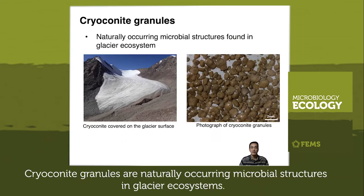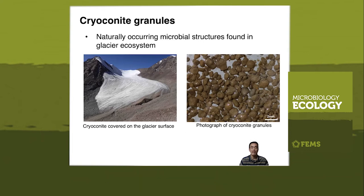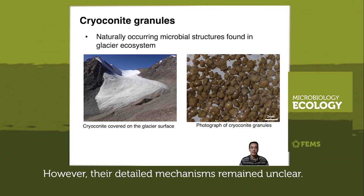Cryoconite granules are naturally occurring microbial structures in glacier ecosystems. They play a key role in carbon and nitrogen cycling in glacier ecosystems. However, their detailed mechanisms remain unclear.